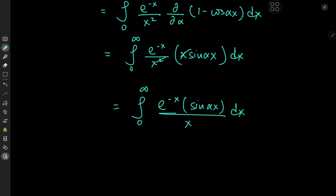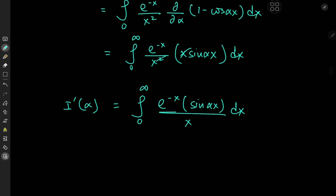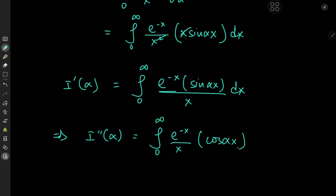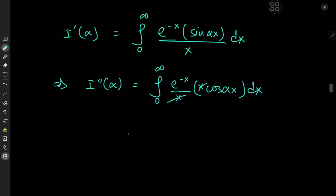This is pretty cool, but we still have a pesky x term in the denominator of the integrand. So we might as well perform the differentiation one more time with respect to alpha, giving us the second derivative of I with respect to alpha, being the integral from 0 to infinity of e to the negative x divided by x times cosine of alpha x times x. Again, we have some nice cancellation — the x terms are gone now, and we have a very simple integral: the integral from 0 to infinity of e to the negative x times cosine alpha x dx.